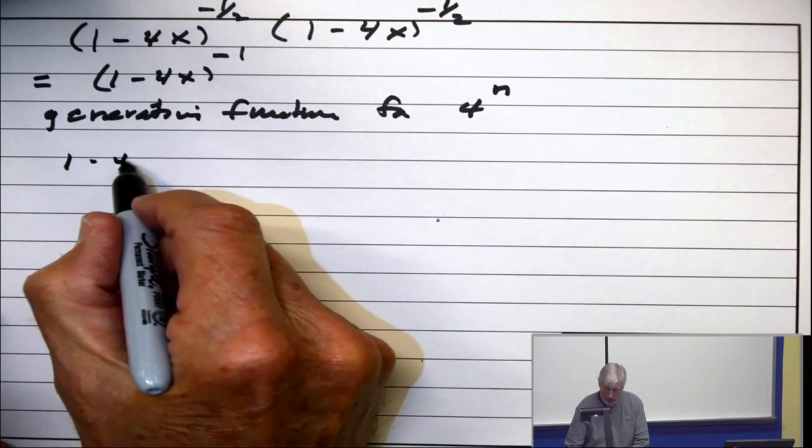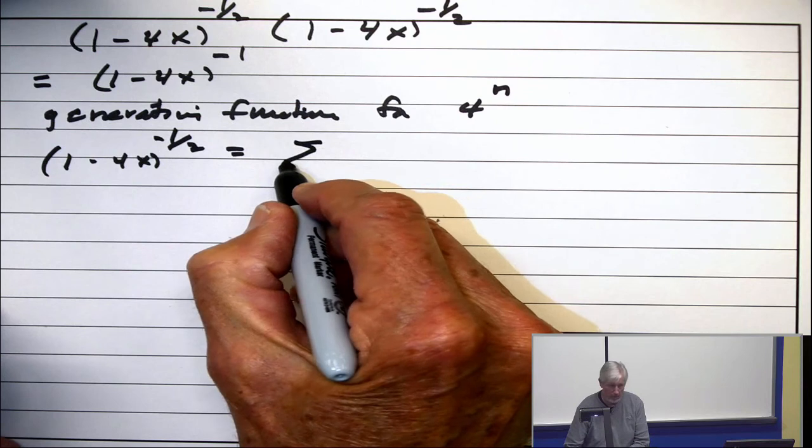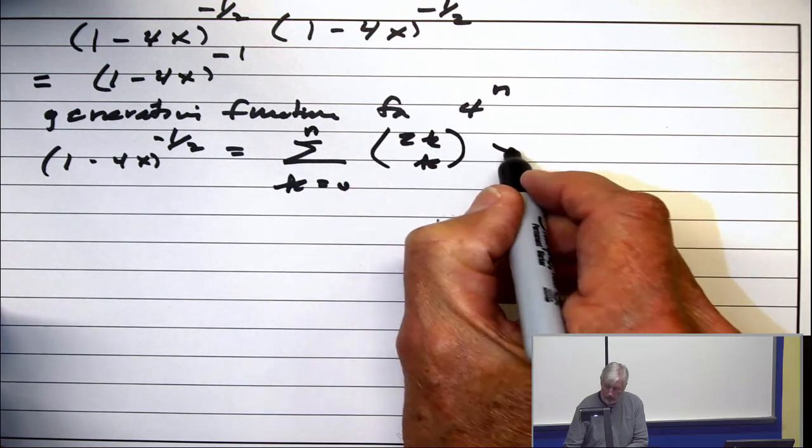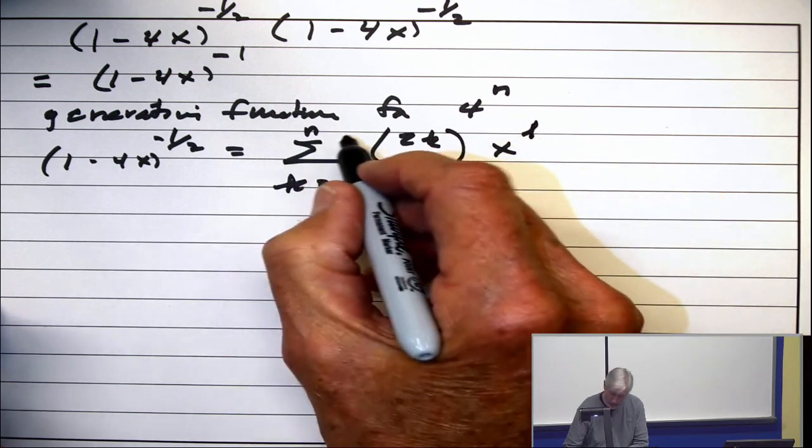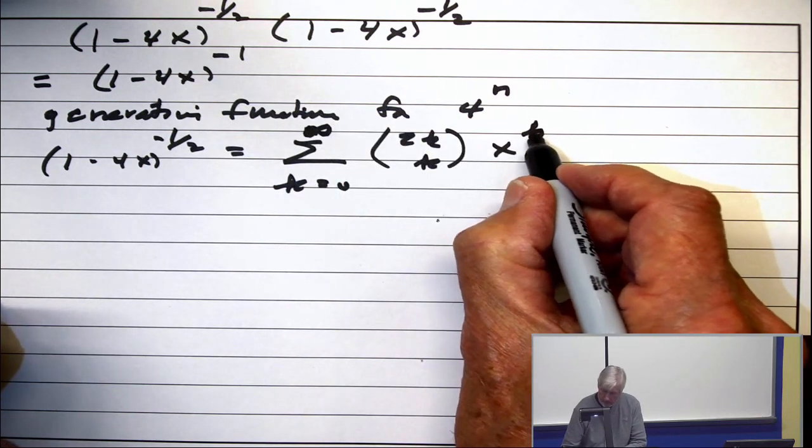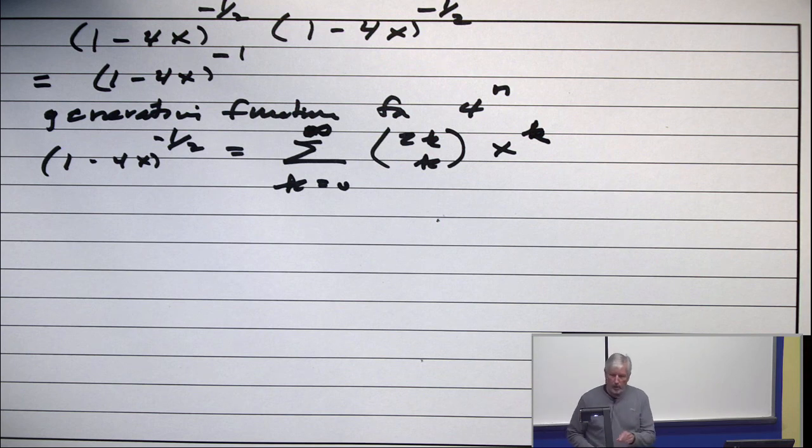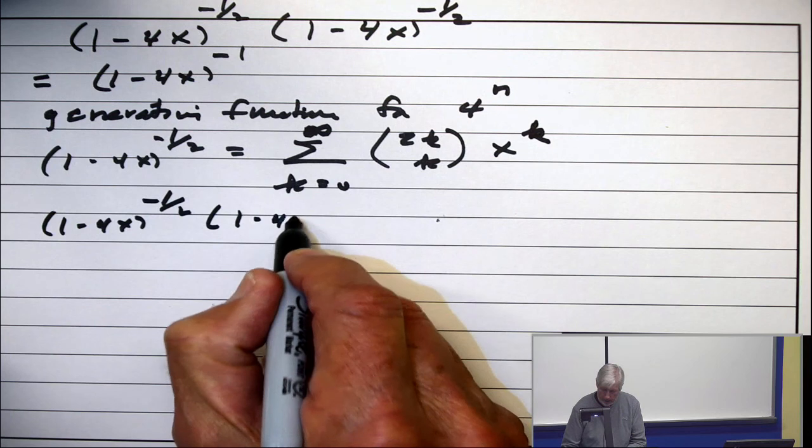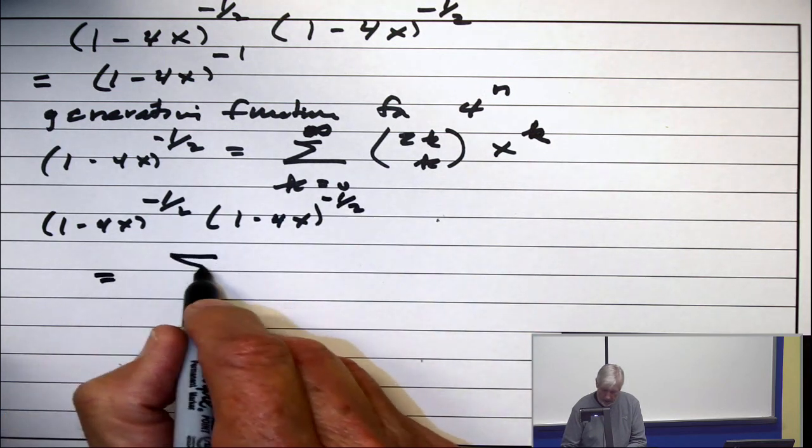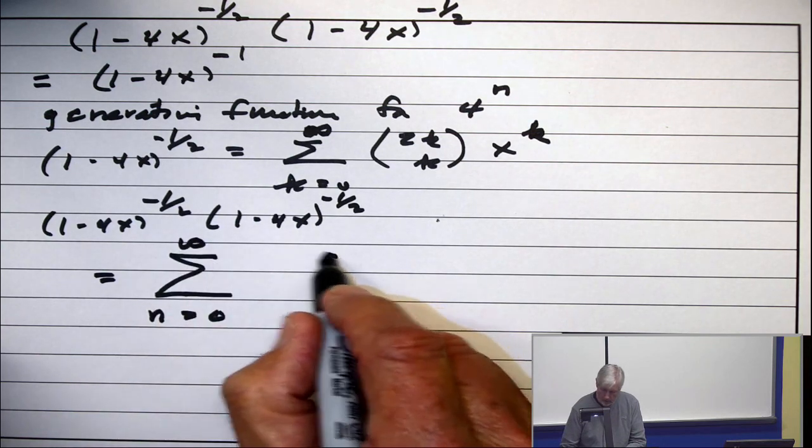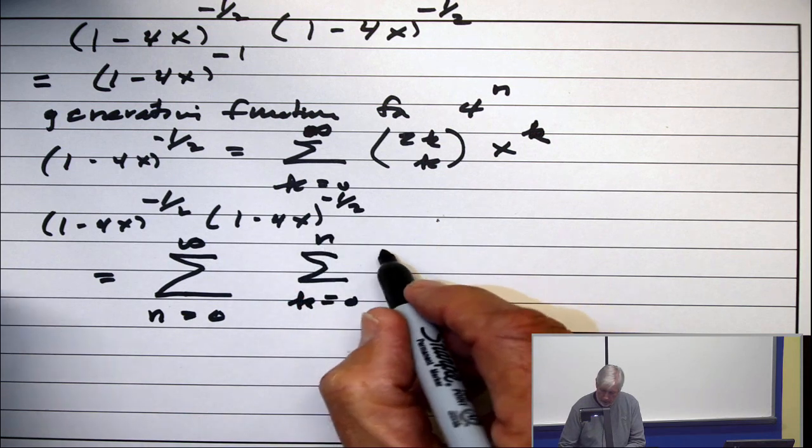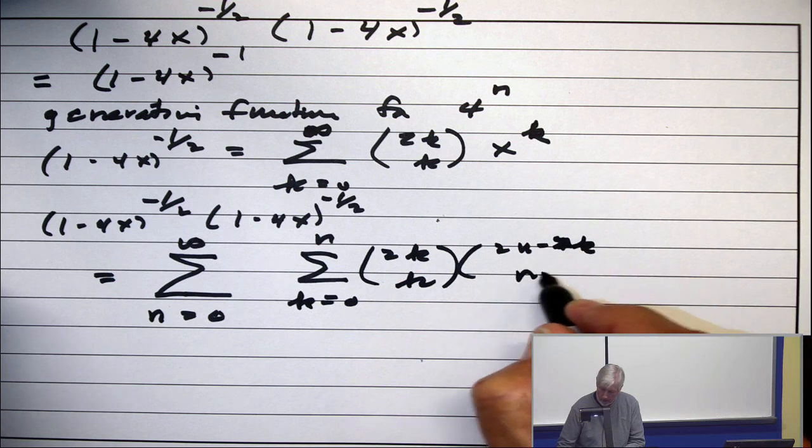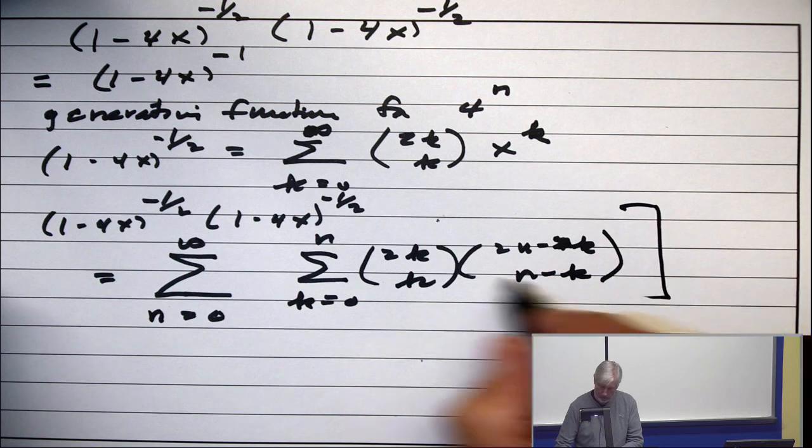But, 1 minus 4x to the minus 1 half is the summation, k equals 0 to infinity, of 2k choose k times x to the k. Okay, so now, let's use products like we just did. 1 minus 4x to the minus 1 half times 1 minus 4x to the minus 1 half is then the summation, n equals 0 to infinity, of the summation, k equals 0 to n, of 2k choose k times 2n minus 2k, choose n minus k, times x to the n.